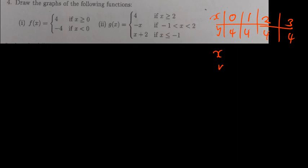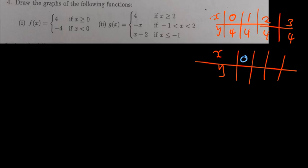For the second piece, since x should be less than 0, starting from 0 but 0 is not included, I'll use negative numbers. Since 0 is the highest number, I'll write 0, then negative 1, negative 2, negative 3. Any number I plug in, as long as it is less than 0, the answer is negative 4. So everything will be negative 4, negative 4, negative 4, negative 4.